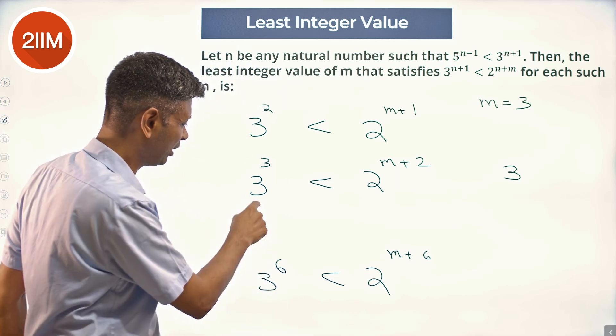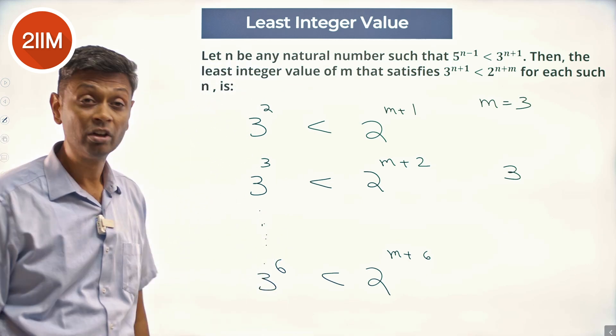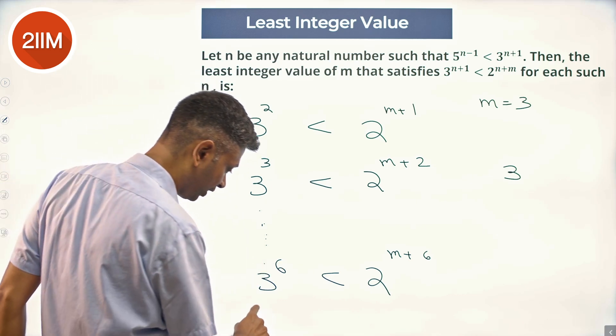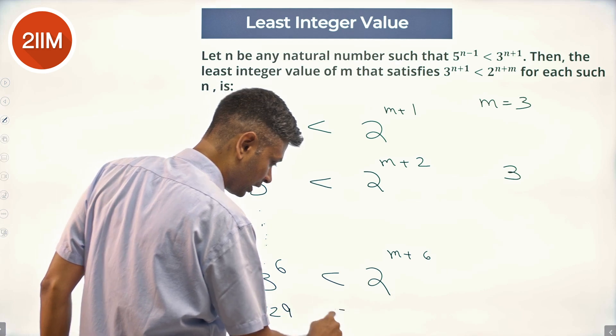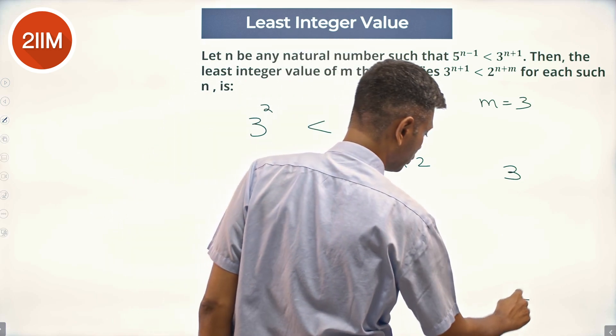It's straight—I don't need to do every number. We go here: 3^6 is 3^2 whole cubed, 9 cubed, 729 < 2^10, so m+6 is 10, m equals 4.